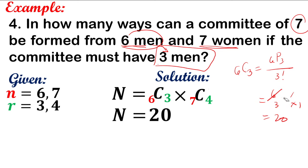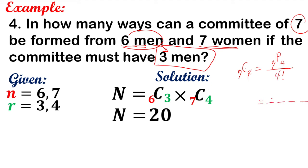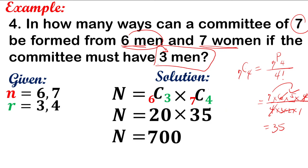For women: C(7,4) equals P(7,4) over 4 factorial, which is 7 times 6 times 5 times 4 over 4 times 3 times 2 times 1. Cancel 4, then 3 times 2 is 6, cancel with 6. So 7 times 5 is 35. C(7,4) is 35. Multiplying: 20 times 35 is 700. There are 700 ways a committee of 7 can be formed from 6 men and 7 women in which 3 must be men.